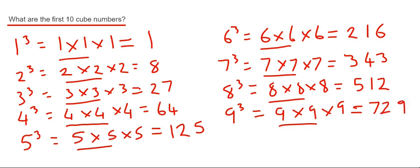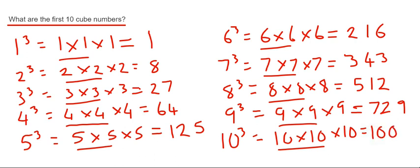And our final cube number will be 10 cubed, which is 10 times 10 times 10. So 10 tens or 100 times another 10 will give us 1000.